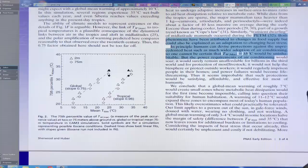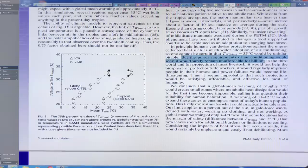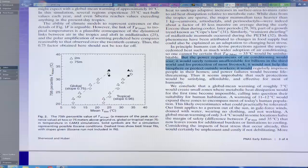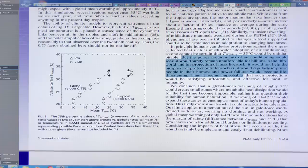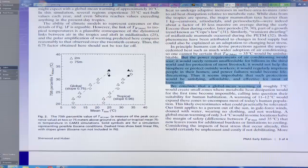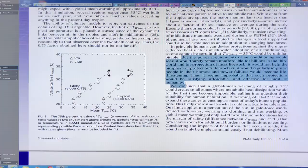So how do we adapt? Well, we would have to have air conditioning under these conditions, but the power requirements for air conditioning would soar. It would surely remain unaffordable for billions in the third world and for protection of livestock. It would not help the biosphere, protect outside workers. It would imprison people in their homes. Power failures would be life threatening. Same with living underground in caves, for example.